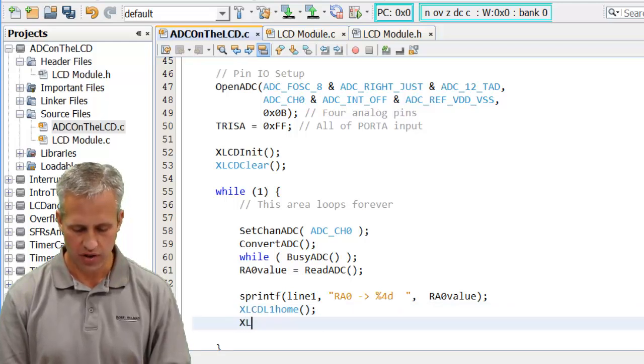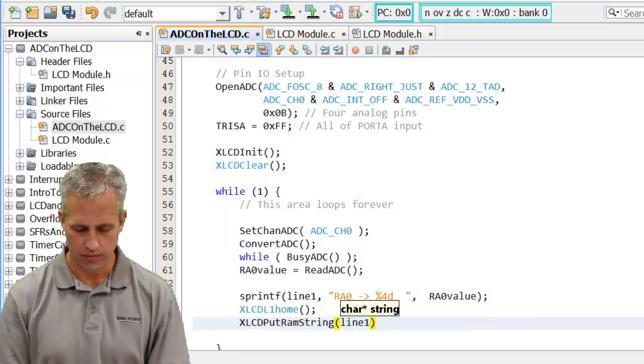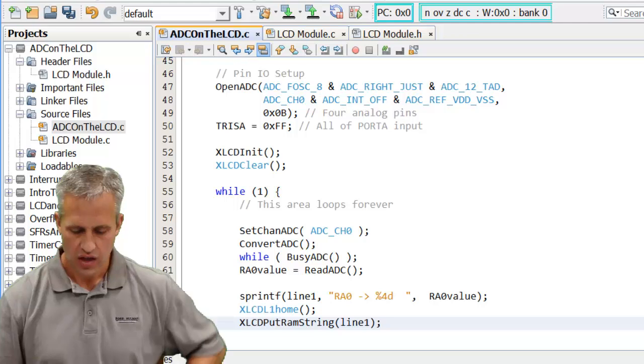Then on line one I'm just going to do an xlcd put ram string of line one. So there's the code.